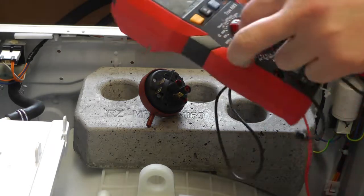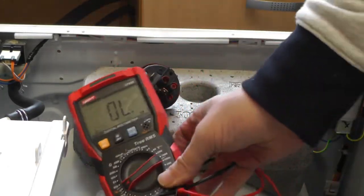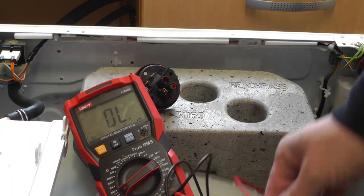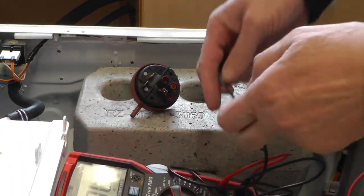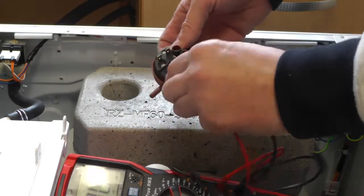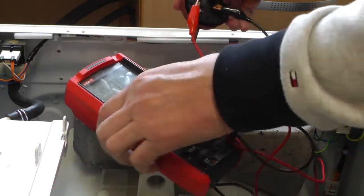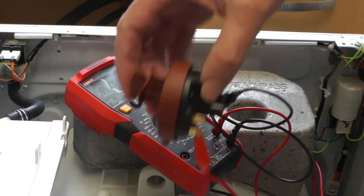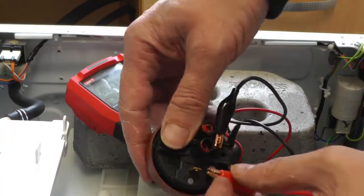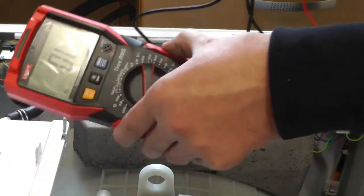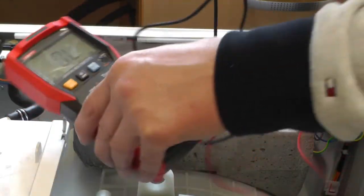So I'm just going to set the meter to continuity. I'm going to connect to the single terminal and then one of the other ones and it should be nothing. Then I'm going to blow up that pipe. That's working.